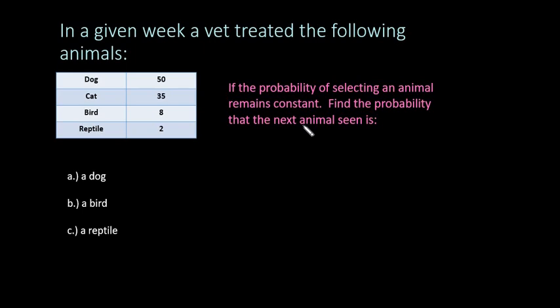So if the probability of selecting an animal remains constant, find the probability that the next animal seen is. We're going to first start with a dog, a bird, and a reptile.